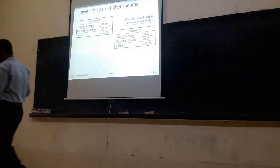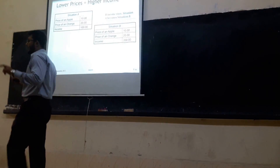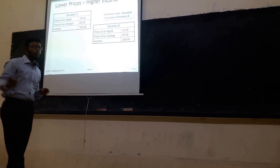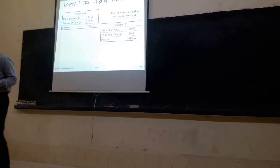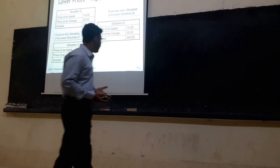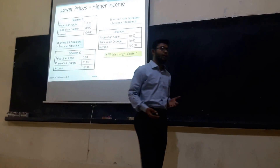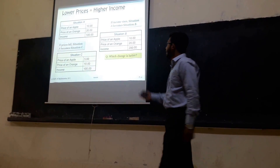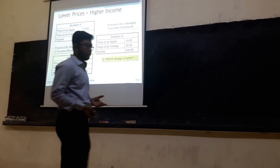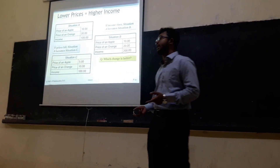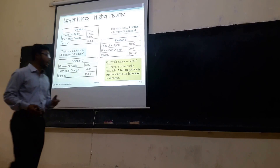Coming back to the original situation: suppose my income stays constant at 100 units, but the price of apples and oranges decreases. In that case, I can also afford more than usual — that is situation C. The question is: which is better? In both cases I can afford more apples and oranges for my family, so both cases are equivalent and equally desirable. A falling price is equal to an increase in income. This is the income effect, and this is the end of my presentation.